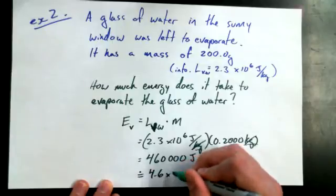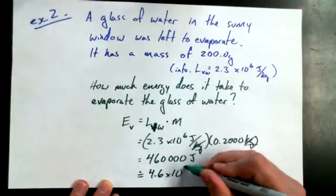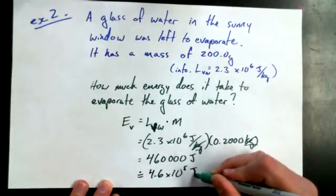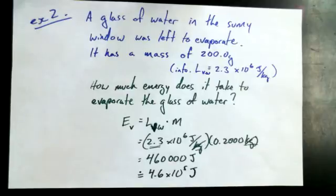we could say 4.6 times 10 to the power of? 3, 4, 5, 5 joules. Because there is two sig figs in the vaporization constant. Well, it happens to have four, but that's okay. We do the lowest one, yeah.